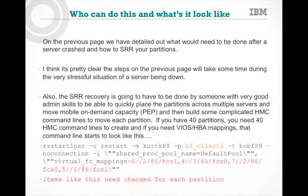This recovery must be done by someone with very good admin skills. If you have 40 partitions to move, you'll need 40 HMC command lines. If you want the VIO NPIV mappings, your command line starts to look like the example shown — 'rrstart lpar -o restart' with many parameters — where the highlighted values change for each of the 39 remaining partitions: the partition name, the virtual fiber channel mappings, slot-specific numbers. You have to get backslashes correct and the right number of parameters. It's not rocket science but it's not something you'll learn in five minutes during a crisis.